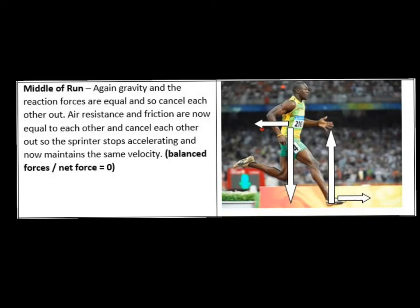During the middle of the race at top speed, weight again acts down through his centre of mass and the reaction force acts upward — equal length, opposite direction — so vertical net force is zero. The friction force generated by his foot in contact with the ground is now equal and opposite to the air resistance force. All four forces are balanced, net force is zero, and he moves with constant velocity.